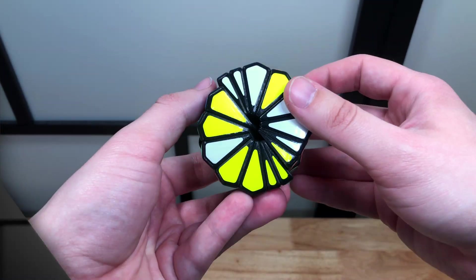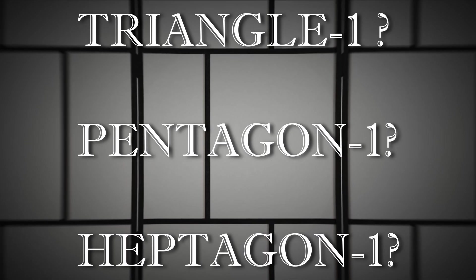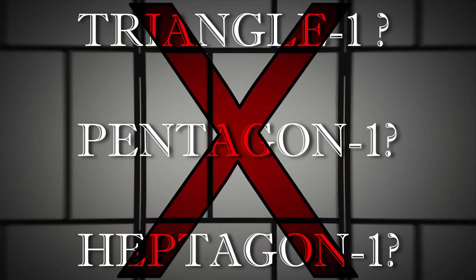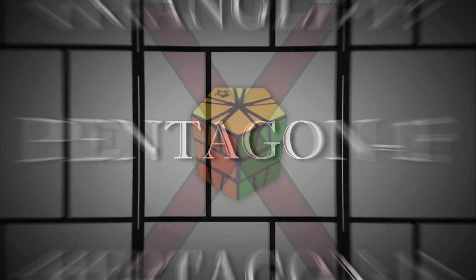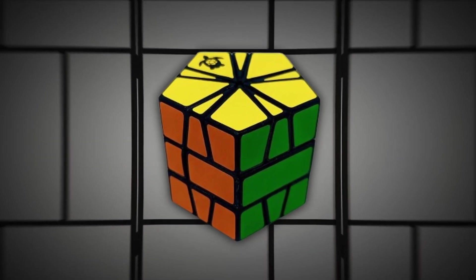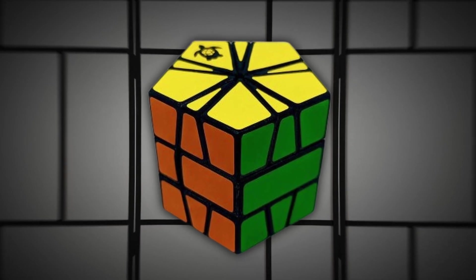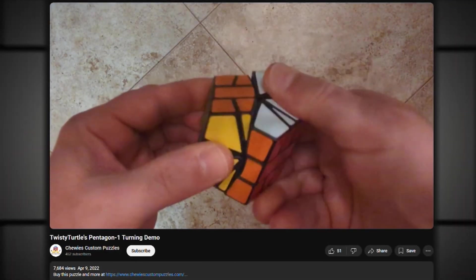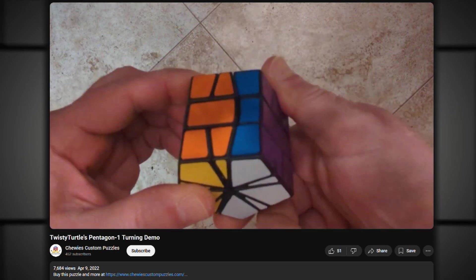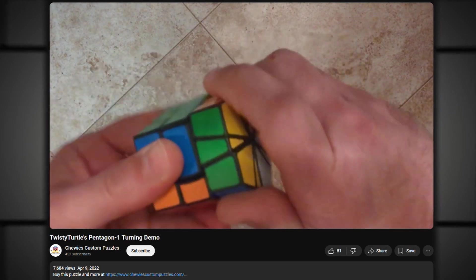But first, I want to preempt your inevitable question. Can we do the same for odd-sided polygons? The answer is no, simply because there's no equivalent way to split them in half while maintaining rotational symmetry. I have seen the Pentagon-1 by Twisty Turtle, but its similarity with the Square-1 is purely superficial. The way the Pentagon-1 turns and scrambles and solves is completely different from the Square-1 based puzzles on a geometric level.